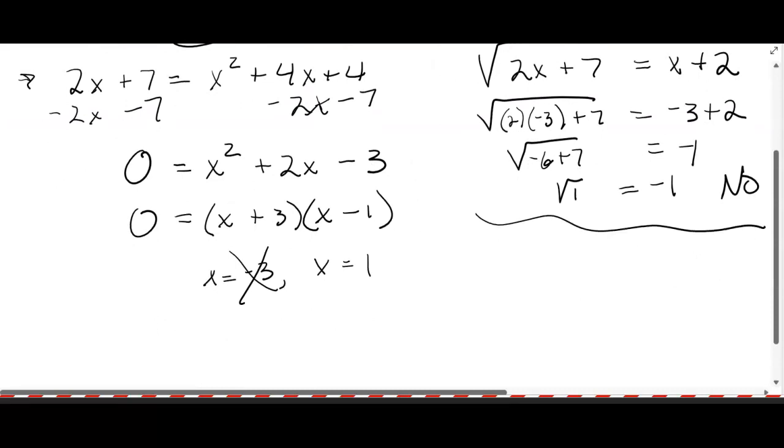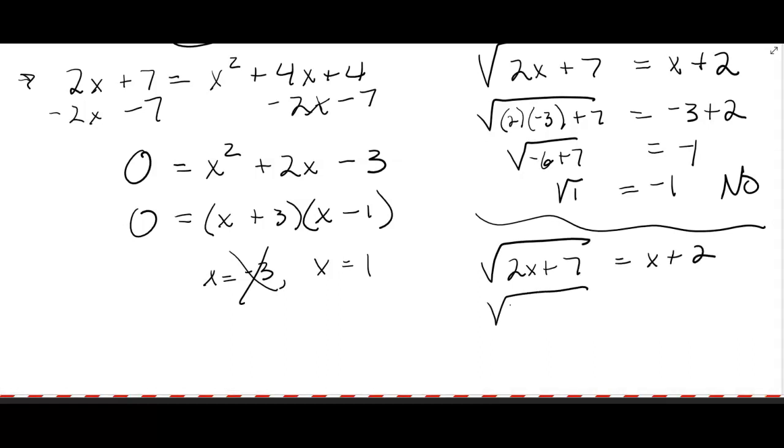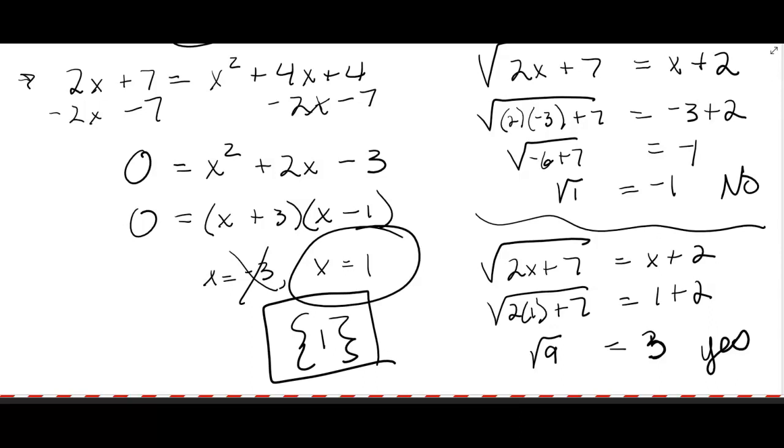Now maybe the 1 works, maybe it doesn't. You go back to the original. But now we're going to put in a 1 and see if it works. Well 2 plus 7 is 9, so we get the square root of 9, and 1 plus 2 is 3. Yes that one works. So what's the answer? The answer is the 1. That's the one we tried and it worked.